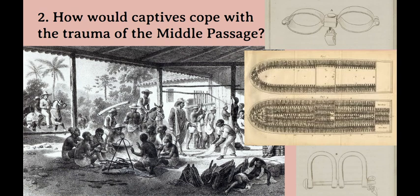After arriving in the New World, another way that captives coped with this trauma was to resist and revolt against their slave masters. Breaking tools, killing plants on the farm, running away, slowing down their work on purpose, and pretending to misunderstand instructions were all ways to resist enslavement. Additionally, these fictive-kin relationships continued to support the psychological well-being of the captives long after they arrived in the New World.